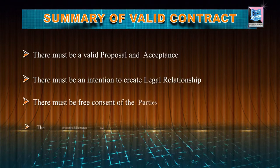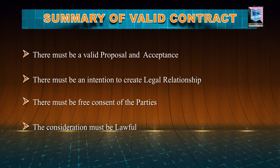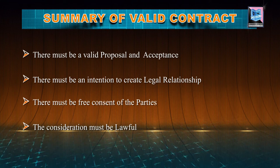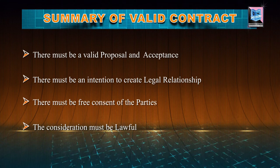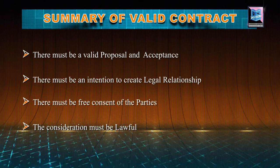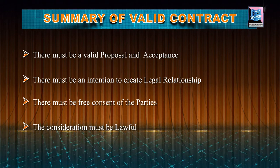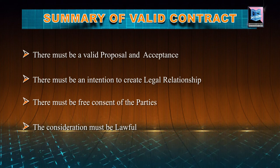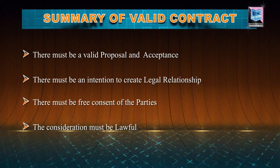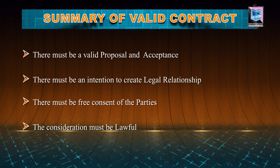Summarizing all these essentials of a valid contract one by one, we can see that there must be a valid proposal and acceptance. To form an agreement, there must be a proposal followed by its acceptance — we discussed this in the last video lecture. The second essential is there must be the intention to create legal relationship. If the parties do not have the intention to create legal relationship, definitely a contract cannot be formed. It is one of the essentials to form a valid contract.